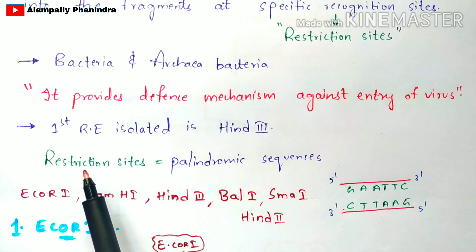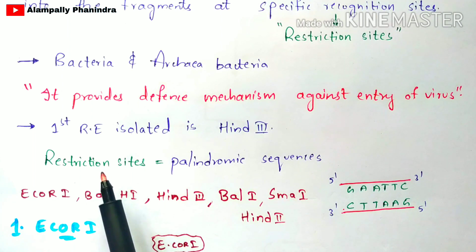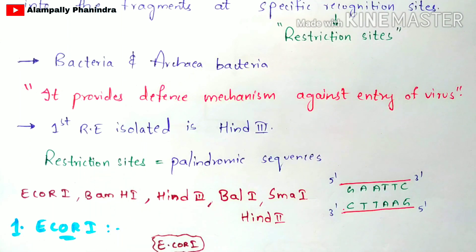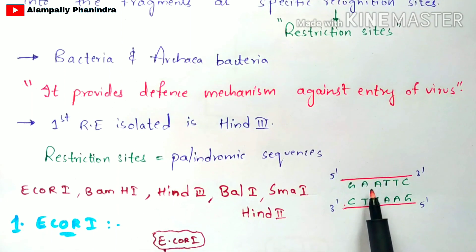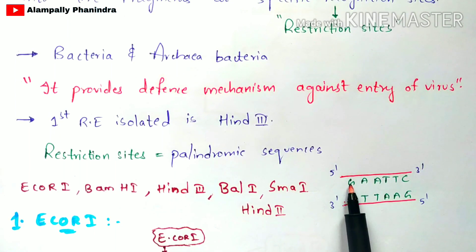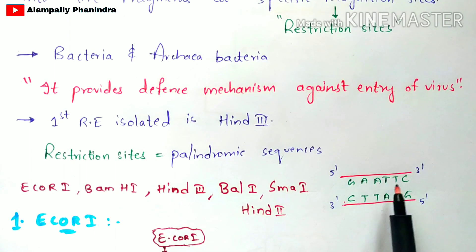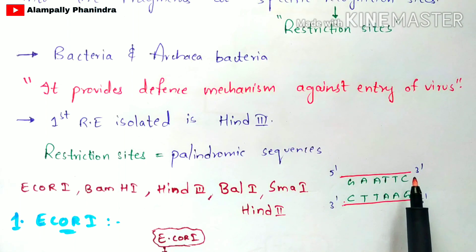The restriction sites are the sites where restriction enzymes will start cleaving the bacterial DNA. These restriction sites consist of palindromic sequences. For example, if you see this double-stranded DNA, the nucleotide sequence is GAATTC, which you can read from the 5' to 3' direction.